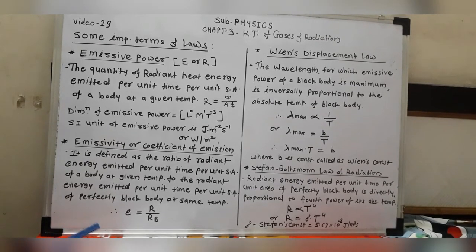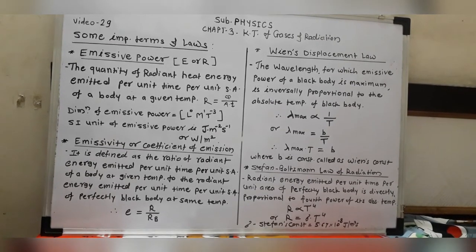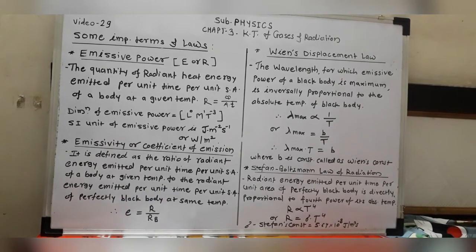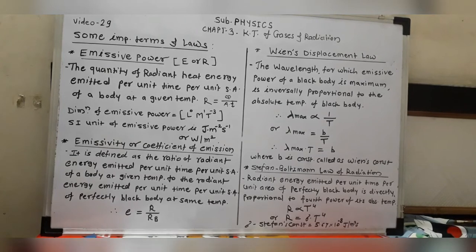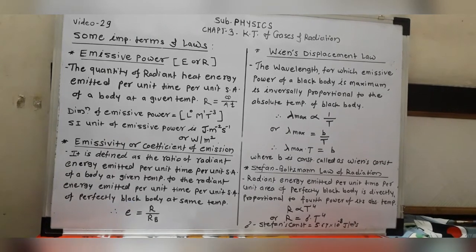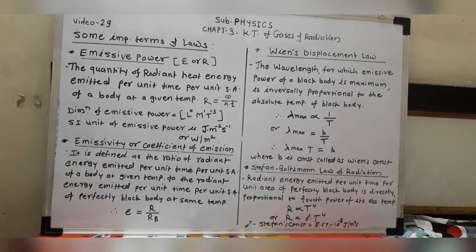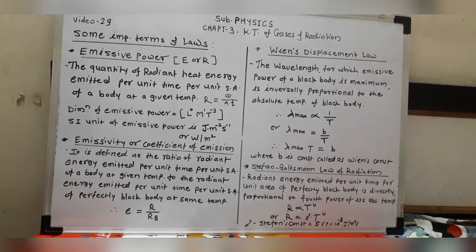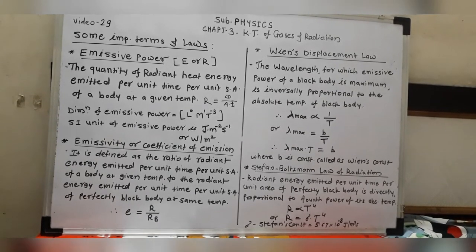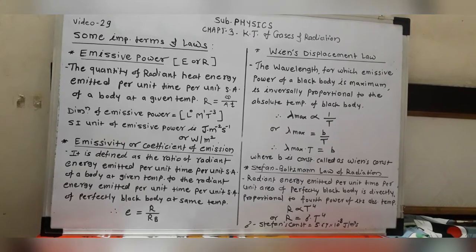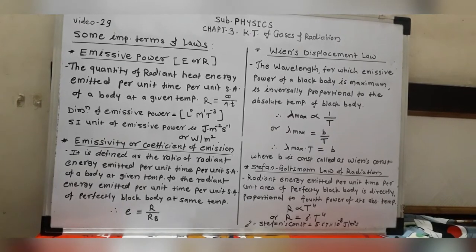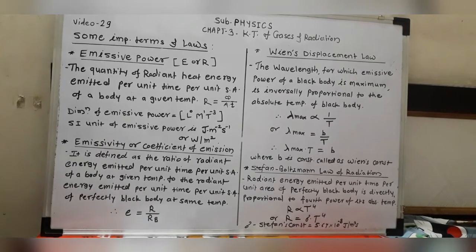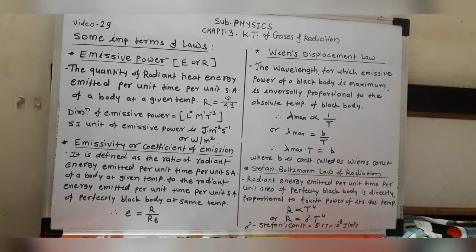The dimensions of Stefan's constant σ are: L⁰ M¹ T⁻³ K⁻⁴. There is no length dimension since it does not appear in the derivation. The temperature term contributes K⁻⁴ because of the fourth power of absolute temperature in the law.